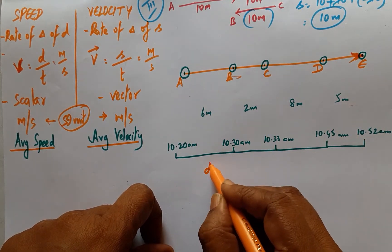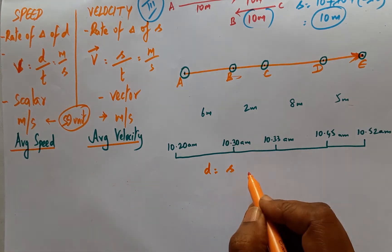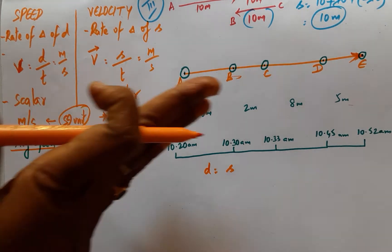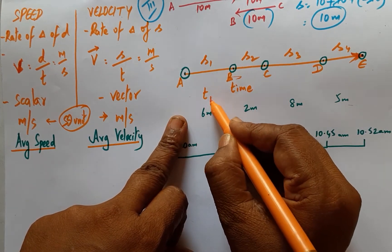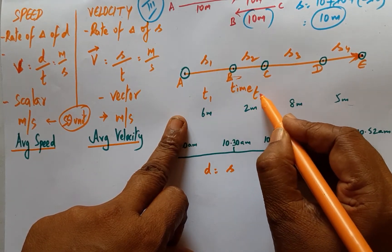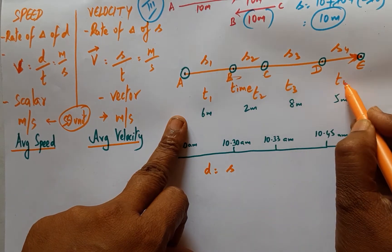Distance will be equal to displacement for straight line motion in one direction. And time consumed is here T1 and here T2, T3, and T4.